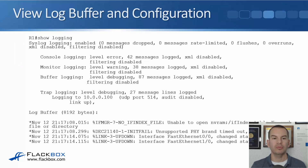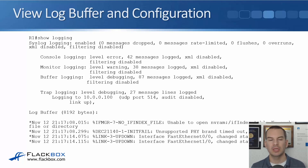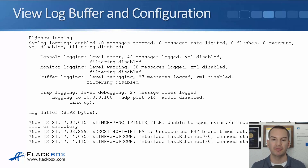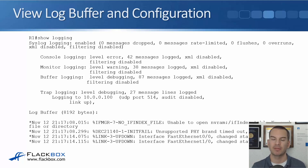Once logging is set up, the show logging command lets you view how you have configured it. You can see here we are logging error severity level events to the console, warning to our VTY lines, and debugging to the buffer. Also from that same show logging command, underneath your configuration you'll see all of the events that are in the buffer. In the example you can see a couple of interfaces coming up at the bottom. That's how you see your configuration and also how you see the events that are in the buffer.